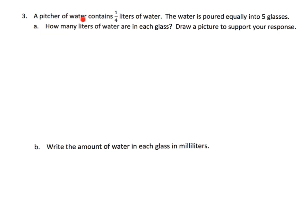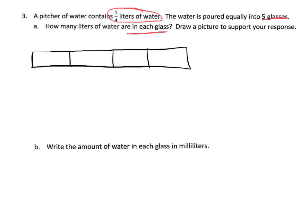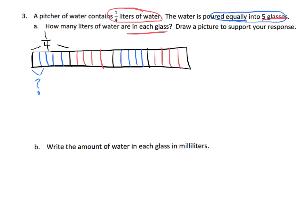On this one, we have a pitcher of water that contains one-quarter liters of water, and the water is poured equally into five glasses. How many liters of water are in each glass? So let's begin by drawing a quarter. One-fourth is going to look like that. It says the water — that one-quarter — is poured into five glasses, so we're going to chop that up into five equal pieces and we want to know the size of one of those little pieces. Each quarter has been cut into five equal pieces.